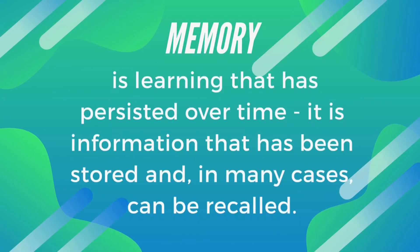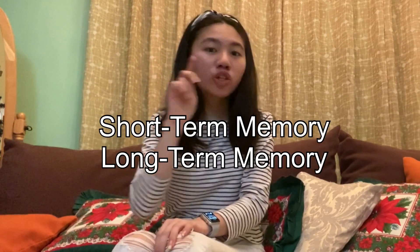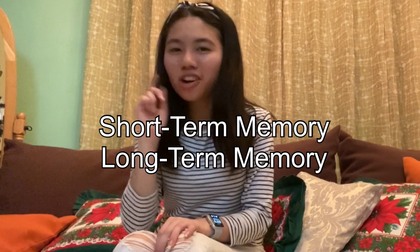First of all, let us define memory. What is memory? Memory is learning that has persisted over time. It is information that has been stored and, in many cases, can be recalled. Memory is a wide range of phenomena, from recalling how a word is spelled to remembering your birthday party. There are two kinds of memory: short-term memory and long-term memory.